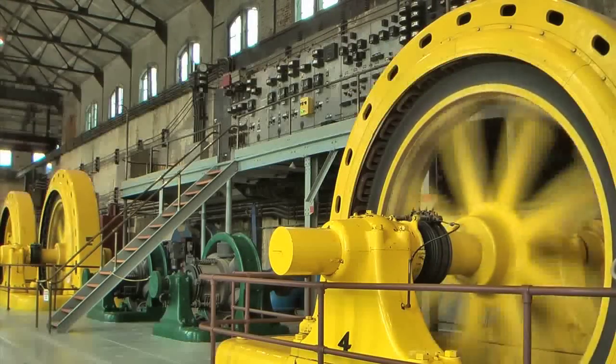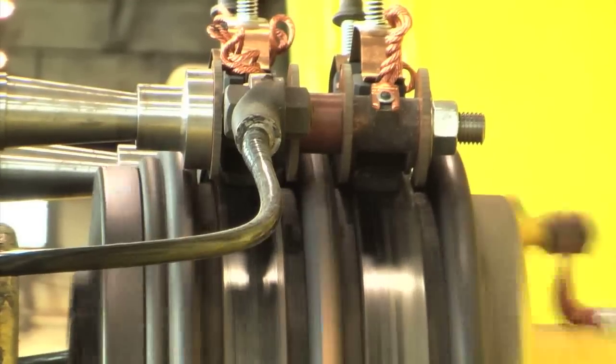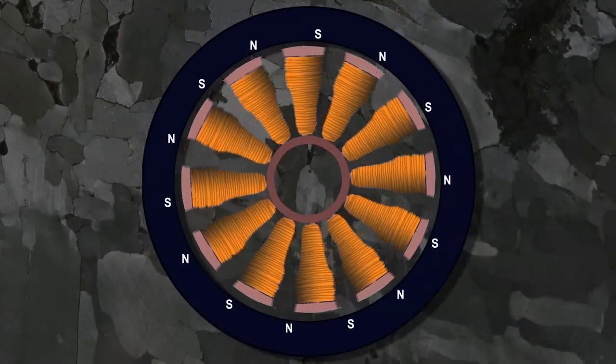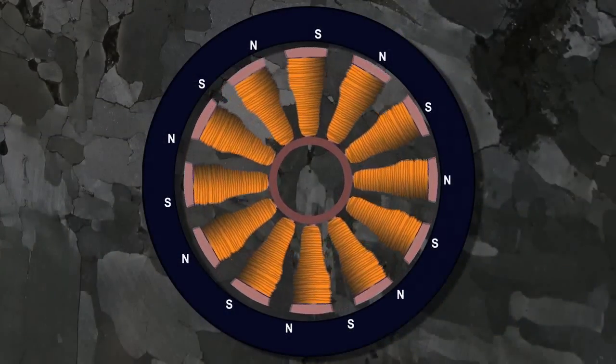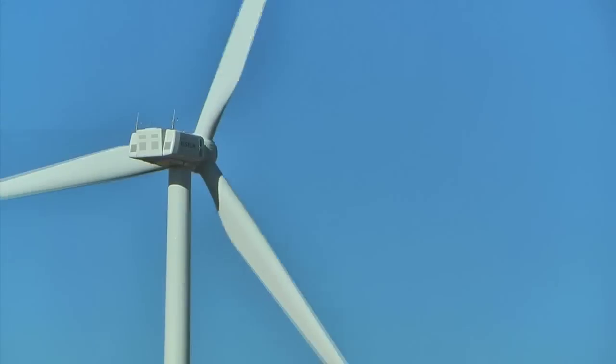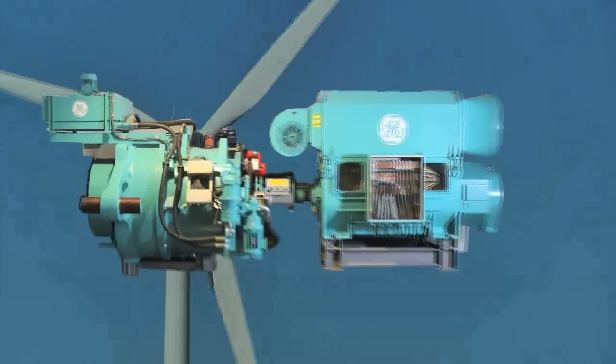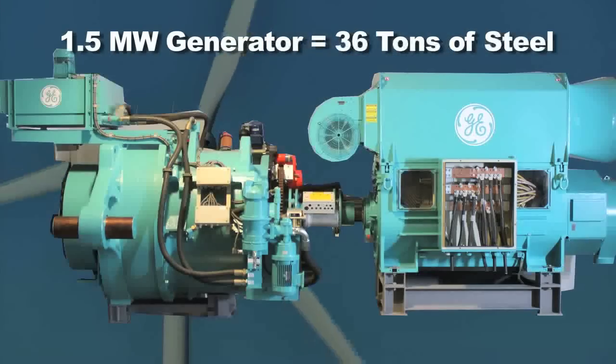Generators are a lot like electric motors except they work in reverse. The rotor is made to move against the magnetic forces creating electricity. Just one generator alone may use many tons of iron.